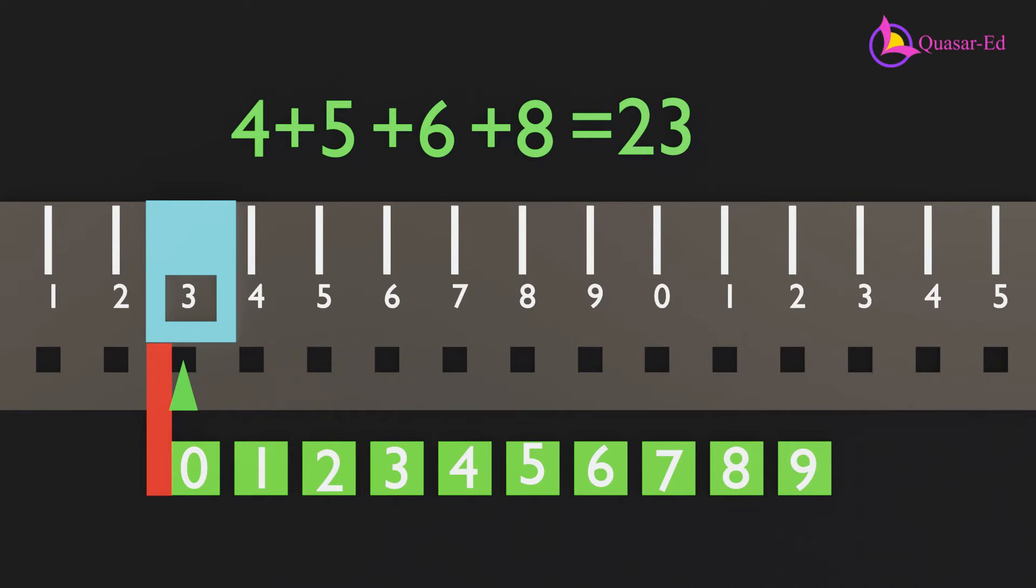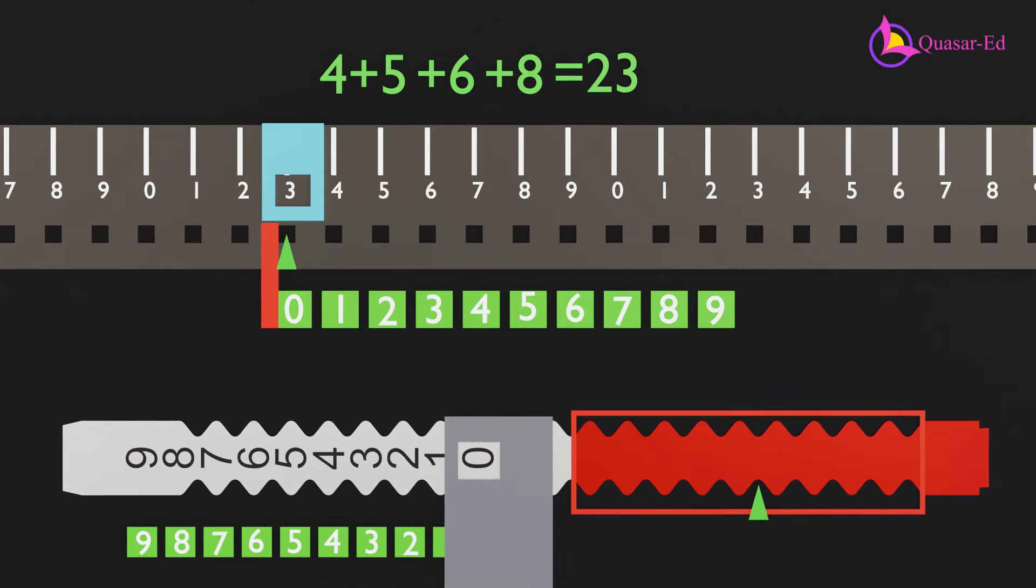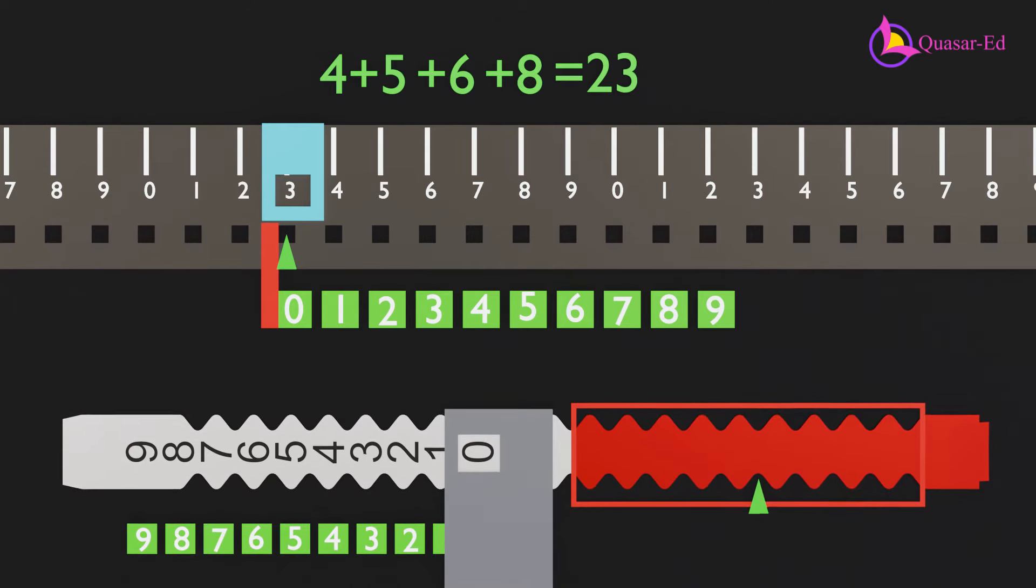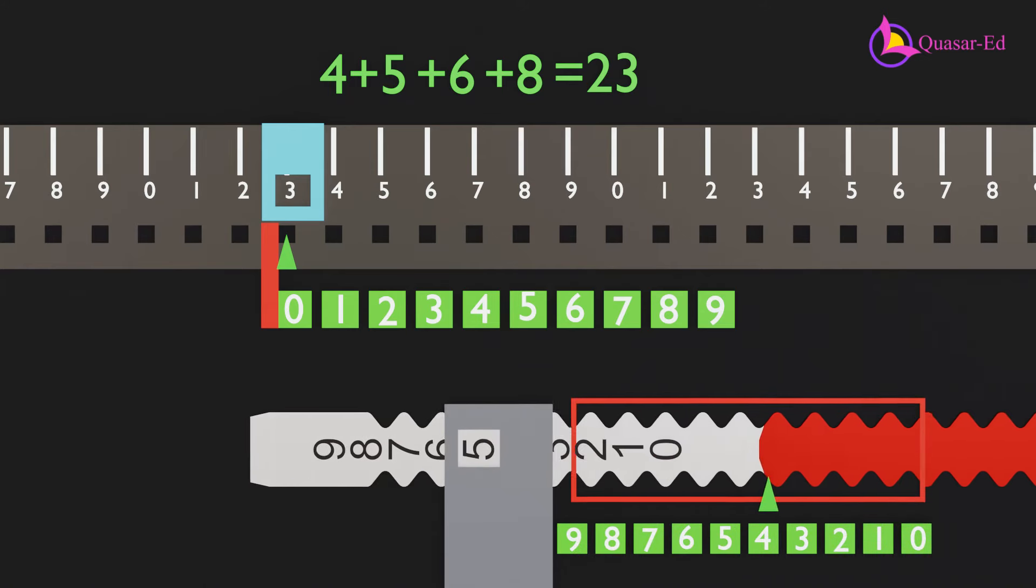This method is similar to how the metal strips work inside a Magic Brain calculator. Although the result window and the limit point are slightly apart, the numbers are offset to compensate, ensuring accurate results.